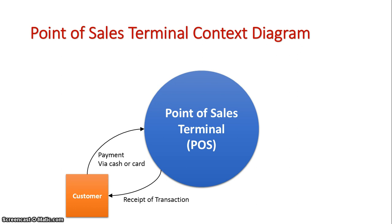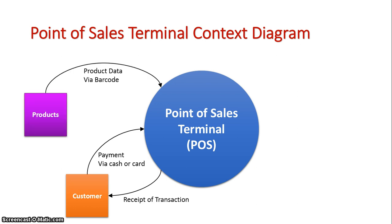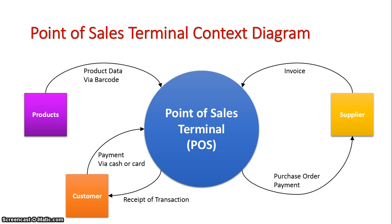When the customer is doing the transaction, the products are getting scanned, and the product data — such as the price, how much is in inventory stock, and whether the product is on sale — is retrieved via the barcode. When the product is low, we need to order new products from the supplier. We send them our purchase order, and then they invoice us the cost. That is a context diagram representing a point-of-sales terminal.